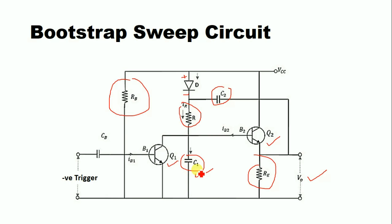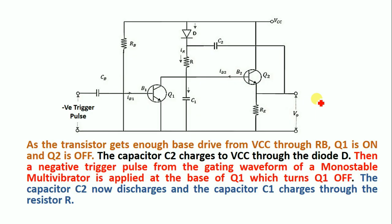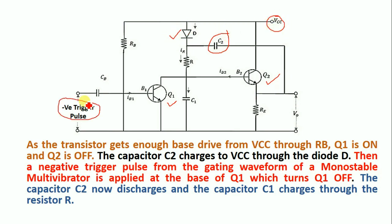A negative triggering voltage is applied to turn on and turn off transistor Q1. Initially, transistor Q1 is in the ON condition and transistor Q2 is in the OFF condition. Capacitor C2 charges up to VCC voltage via diode D.